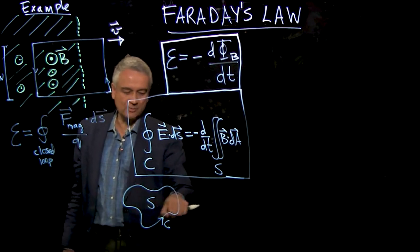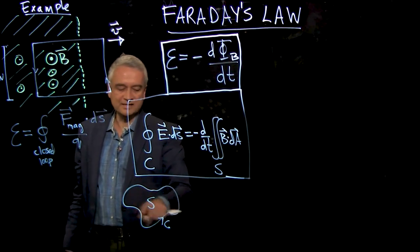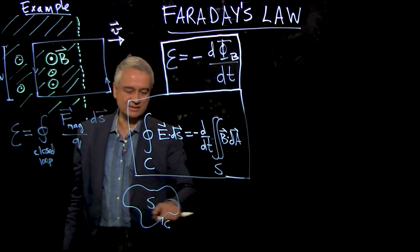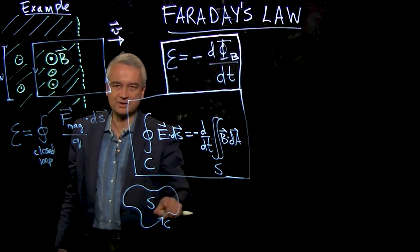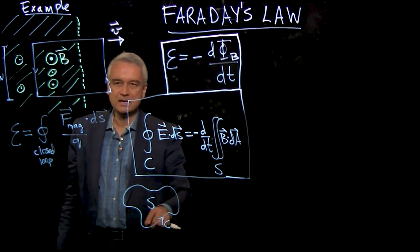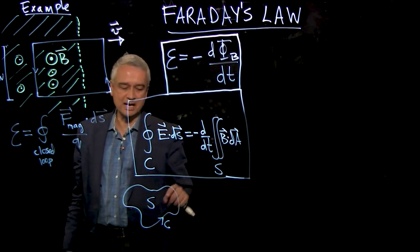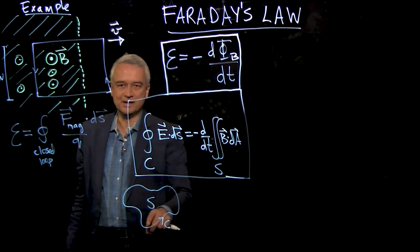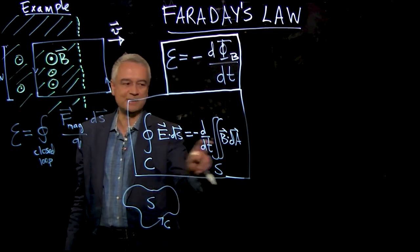And if you put an aluminum wire here, this integral of E dot dS, this electromotive force, is going to push a current around that wire. But Faraday's law applies whether or not there's a loop of aluminum here. Faraday's law is really a statement about the fields.